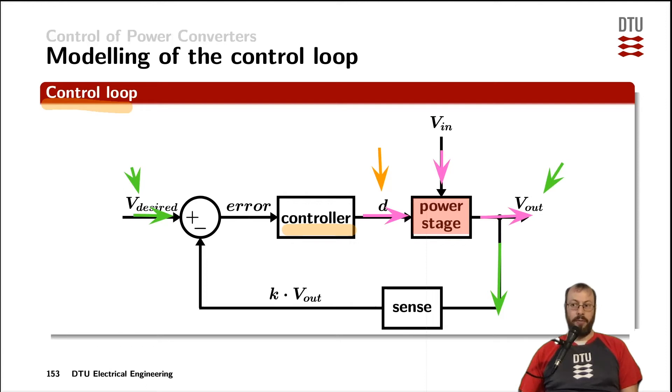So you take a feedback, you sense it and typically you multiply it with the factor of k which very often is simply a voltage division by two resistors as the output voltages of the power stage are often too high level to be used in the low voltage and in the auxiliary circuits.